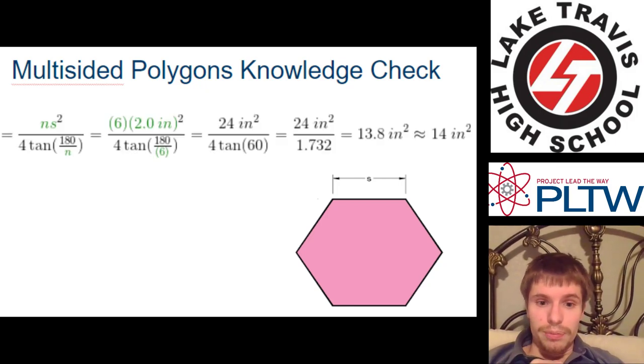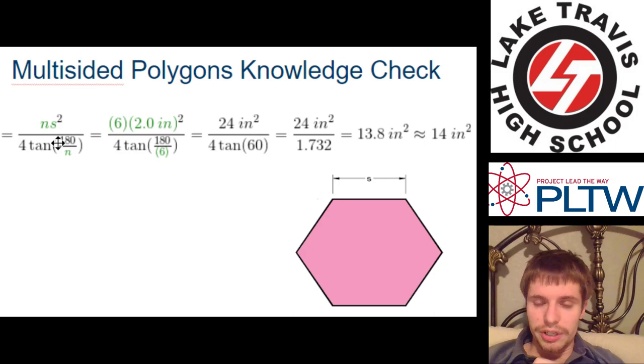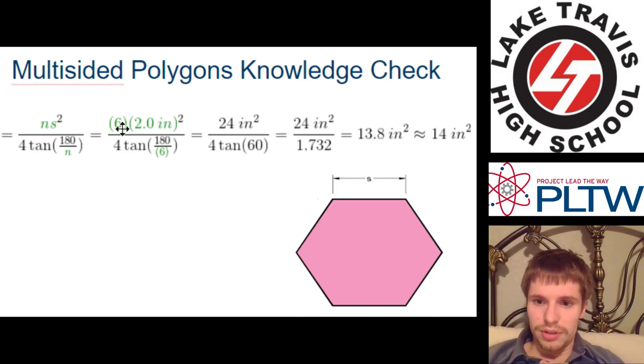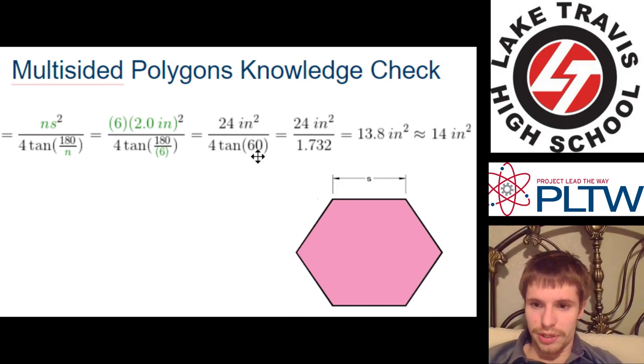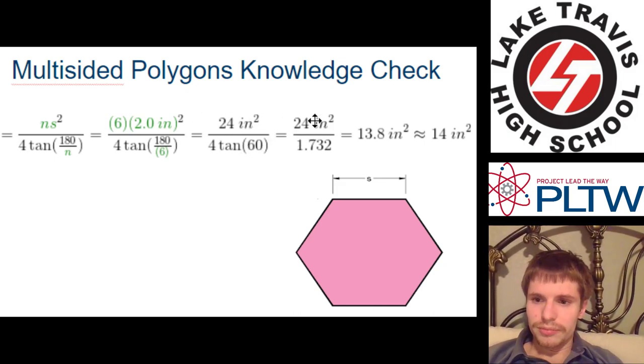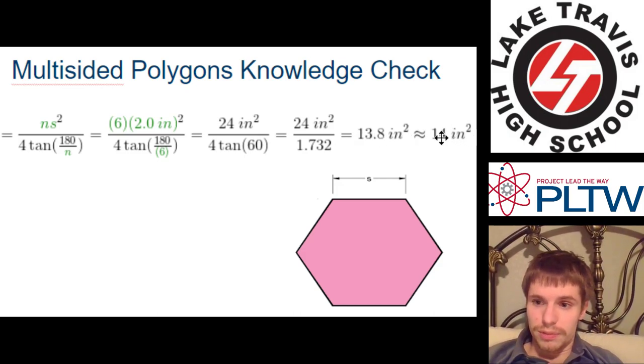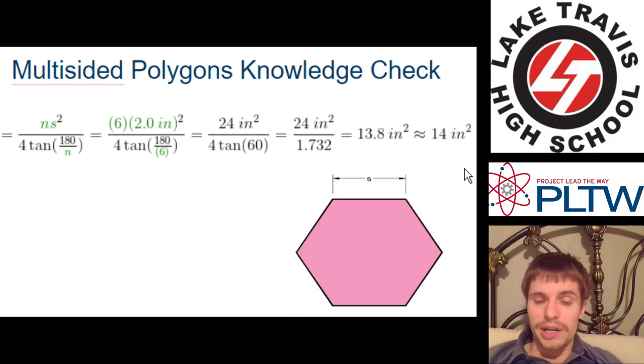Here's my work. I put the formula over here again. N S squared over 4 tangent 180 divided by N. N is 6 in this hexagon. S is 2.0. Again, down here, N is 6. I simplified it a little bit. 24 square inches, tangent of 60 times 4. And then all of that simplifies down to 13.8 inches squared. And then I rounded it to two decimal, or to two digits here, to two digits, 14 inches. And why did I round to two digits here? Well, that's the next thing I wanted to talk to you about, is precision.